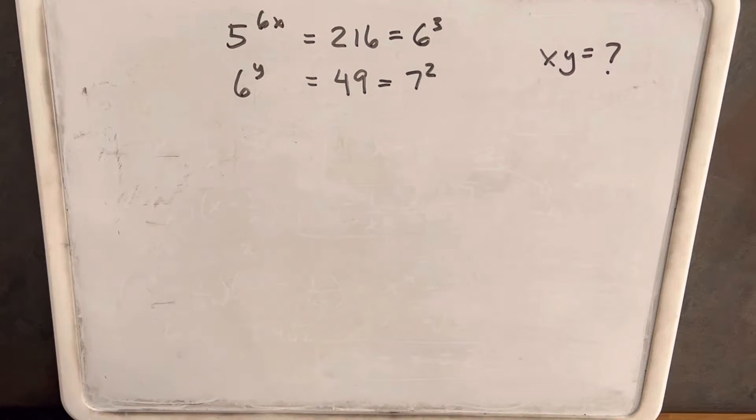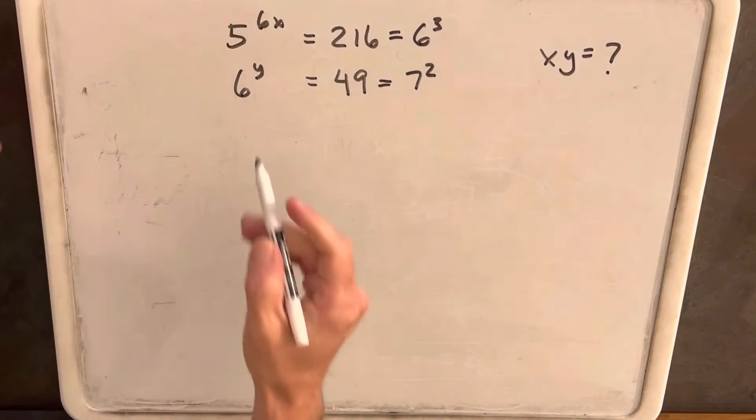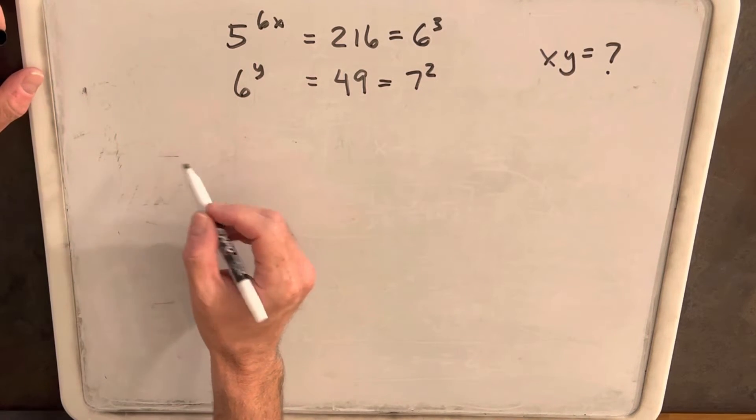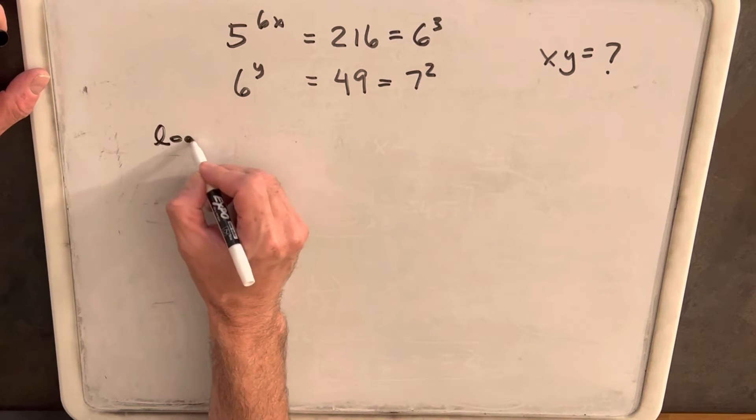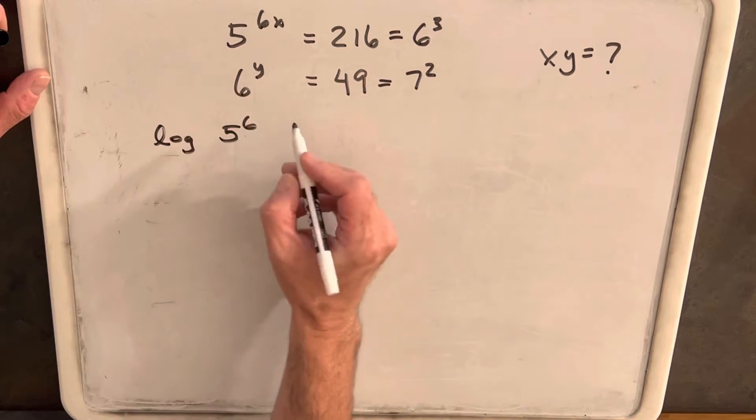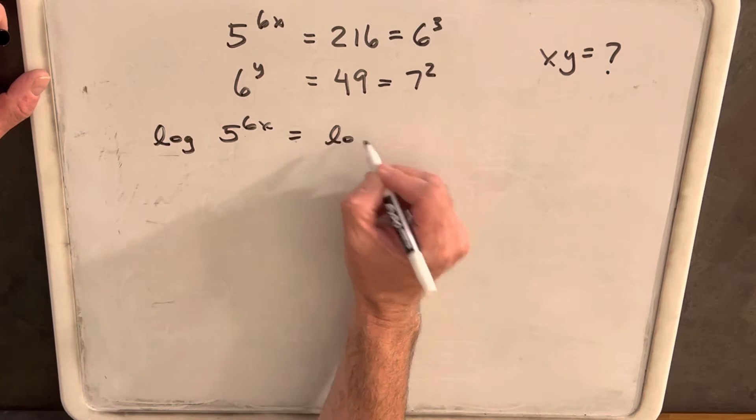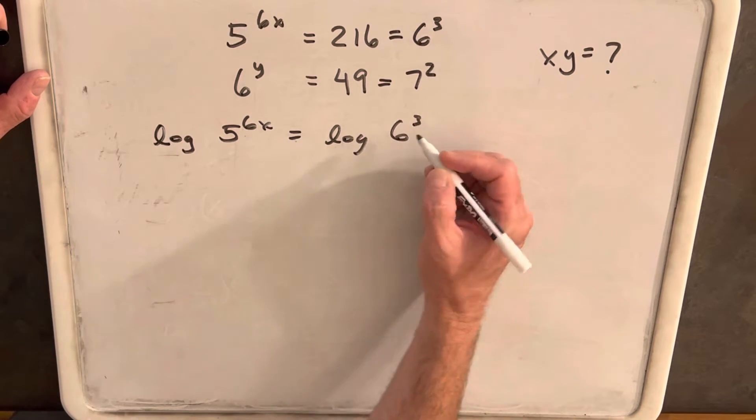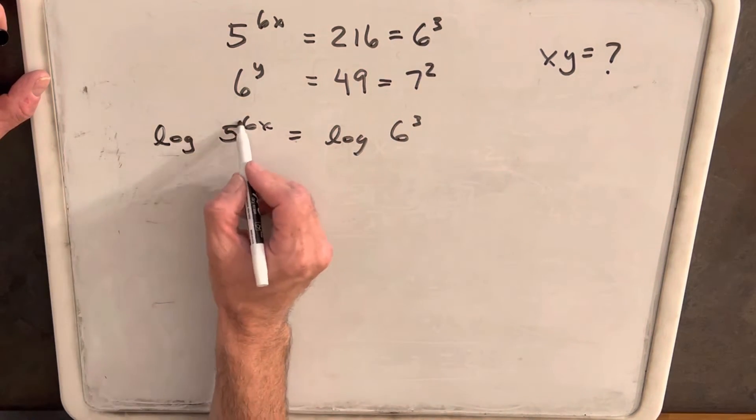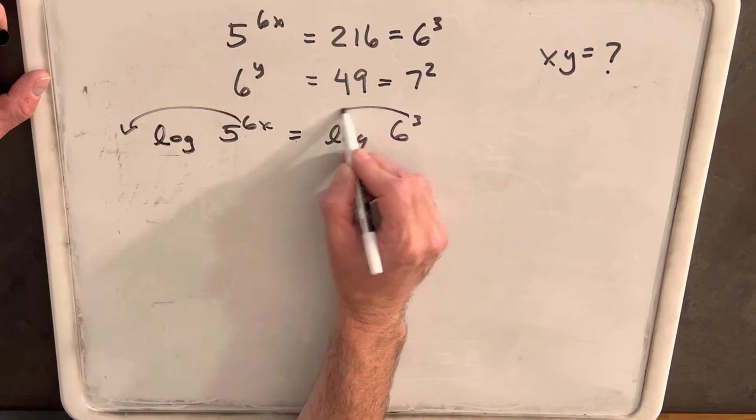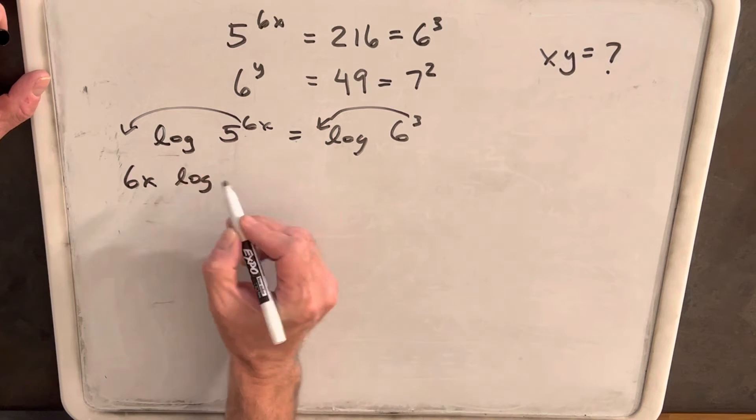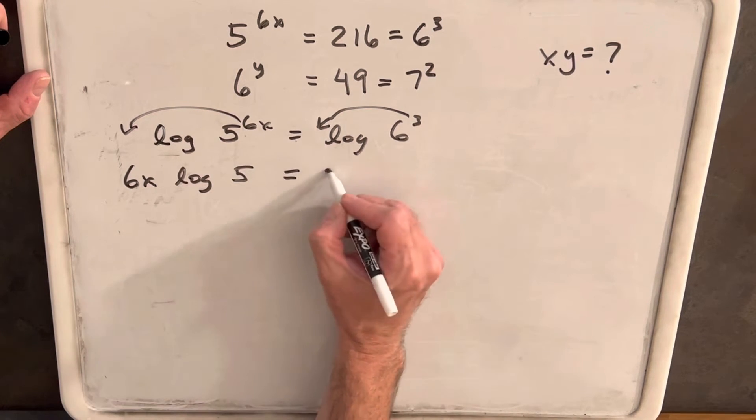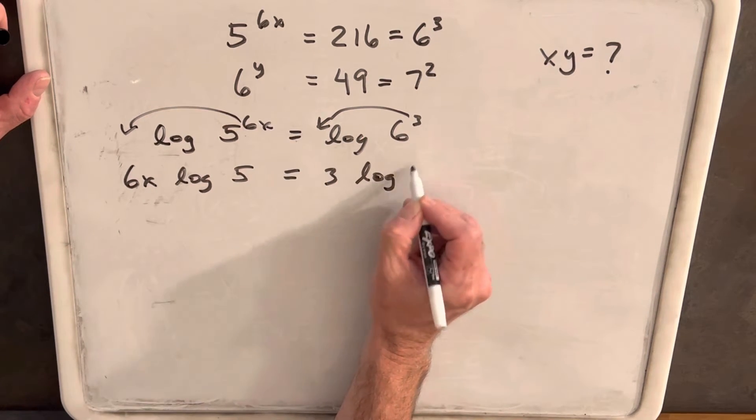So then what I'm going to do is I'm going to take the log of each of these equations on both sides. So for the first equation, we'll have the log of 5 to 6x equals the log of 6 cubed. And then I'll just take my exponents to the front. So we'll have 6x log of 5 equals 3 log of 6.